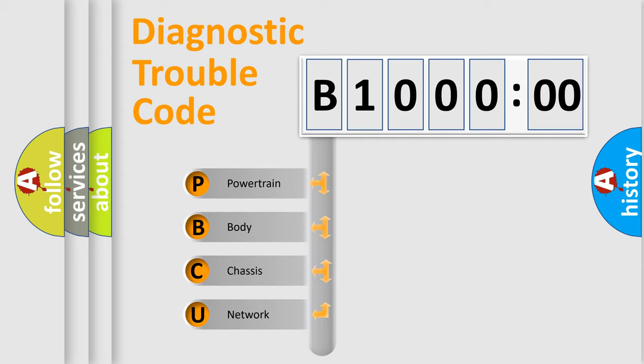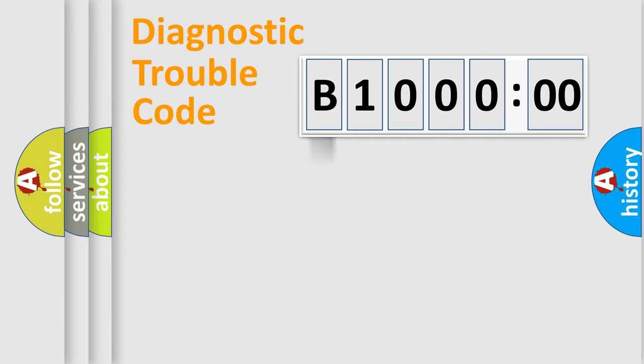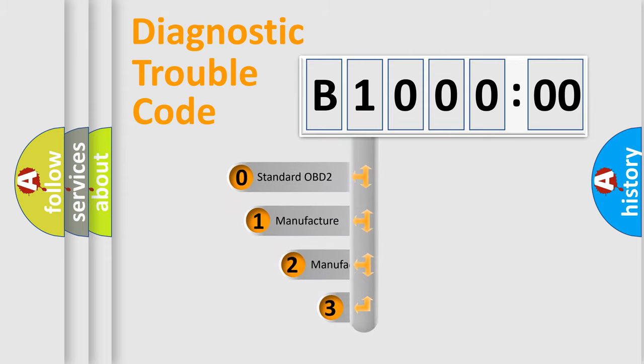We divide the electric system of automobile into four basic units: Powertrain, Body, Chassis, and Network. This distribution is defined in the first character code.